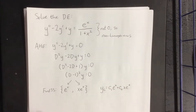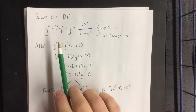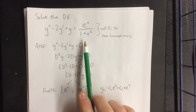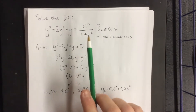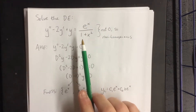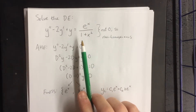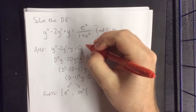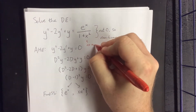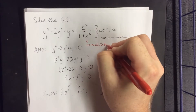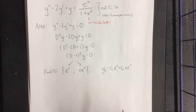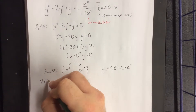That right there is about half the battle. That just takes care of the complementary solution — we still need a particular solution. When I look at e to the x over 1 plus x squared, the first thing I notice is that, despite the fact that there's an e to the x involved, there is no annihilator for something of the form 1 over 1 plus x squared. As such, no annihilator — so unfortunately we can't use the method of undetermined coefficients. It means that instead, we get to use variation of parameters.